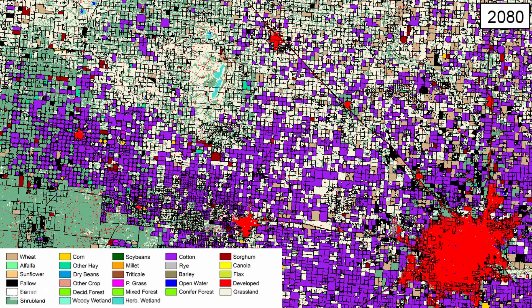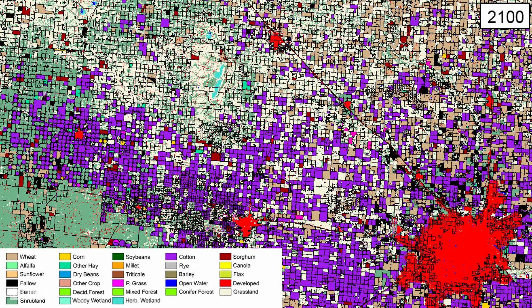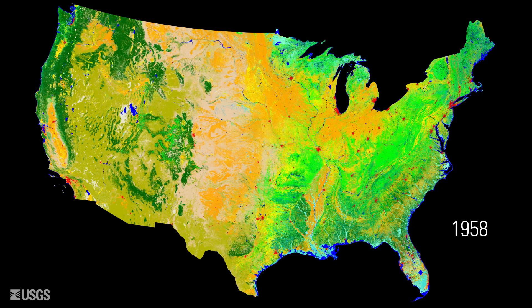Thematically, we can map all the land cover classes found in the national land cover database, and that's what makes our model unique. From a biodiversity standpoint, from a climate perspective, from a water quality standpoint — just the wide variety of applications that we're able to support, given that we're trying to produce things that are consistent with the land cover databases that USGS is already producing.